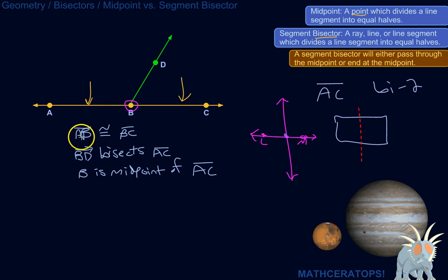Okay, so here's just some terminology or some notation. So, line segment AB is congruent with BC, so they have the same length. So, the ray BD bisects AC, and then B is the midpoint of AC. So, all these are stating basically the same thing.